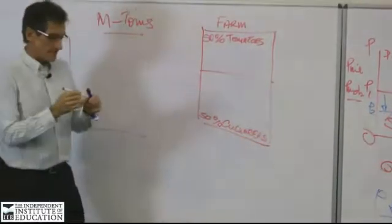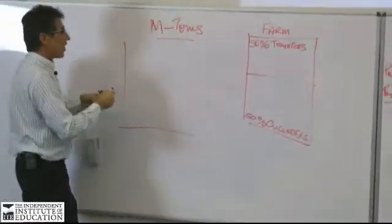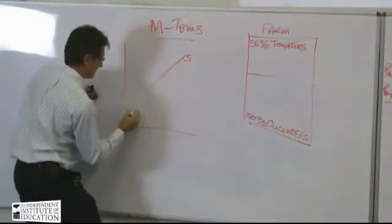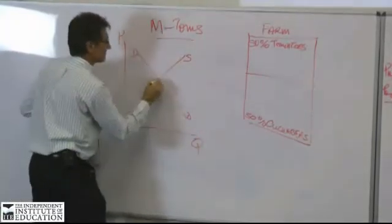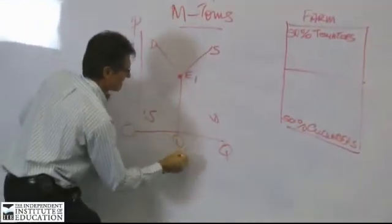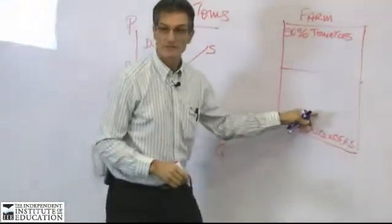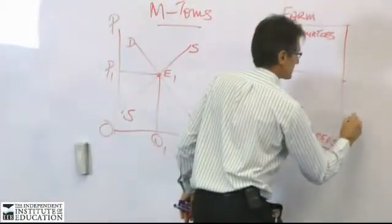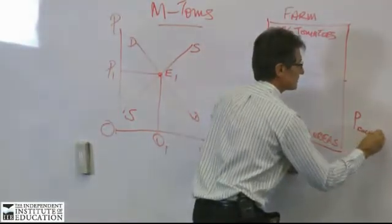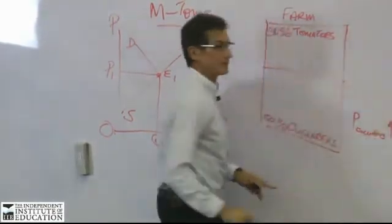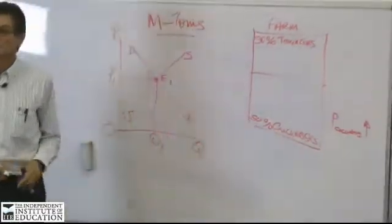What would happen in the market for tomatoes if the price of cucumbers goes up? So P for cucumbers, I'm going to put cucumbers next to P there, goes up. What do you expect will happen here in your market for tomatoes?